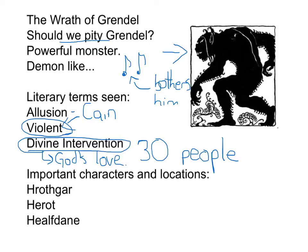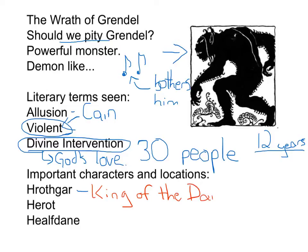We find out that no one goes anywhere near the Mead Hall for over 12 years, and so it's abandoned. Important characters: Hrothgar is our king — the king of the Danes. Herod is the Mead Hall, and Hylfdain is Hrothgar's father.